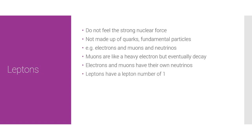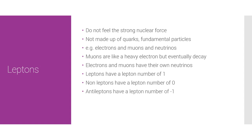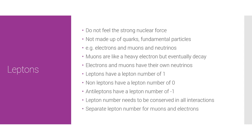Lepton number is another quantum number we need to be aware of. Leptons have a lepton number of 1, non-leptons have a lepton number of 0, and anti-leptons have a lepton number of minus 1. Lepton number also needs to be conserved in all interactions. One thing to note is that electrons and muons have their own separate lepton numbers, so in an interaction the overall lepton number may be conserved but you may still have a mismatch between the electron lepton number and the muon lepton number.